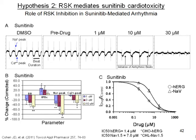I wanted to see what concordance we had between the IPS model using the microelectrode array and well-established models at Roche — CHO cells overexpressing HERG as well as Chinese hamster lung cells overexpressing NAV1.5, assayed on the PatchXpress. We attempted to clamp the IPS cells but were not successful, which is why I utilized the CHO cells. The IC50 of HERG was around 1.4 micromolar and of NAV1.5 was around 7 micromolar, correlating well to what we saw in the IPS cells in terms of initiation of arrhythmic beats. Inhibition of the sodium channel correlated to the QT prolongation we were seeing.